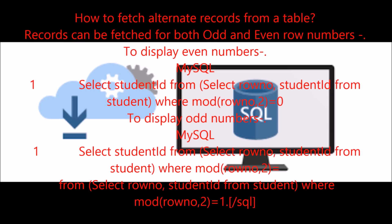How to fetch alternate records from a table? Records can be fetched for both odd and even row numbers. To display even numbers — MySQL: SELECT student_id FROM (SELECT row_no, student_id FROM student) WHERE MOD(row_no, 2) = 0.